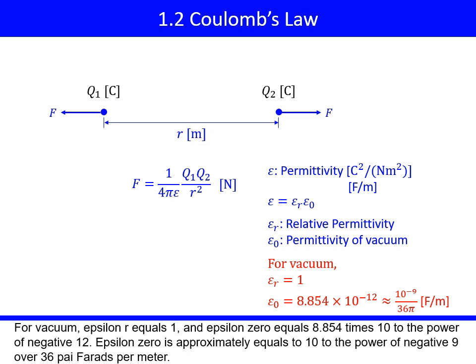Epsilon 0 equals 8.854 times 10 to the power of negative 12, approximately equals to 10 to the power of negative 9 over 36 pi farads per meter.